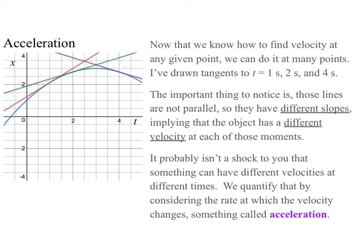The important thing to notice is those lines are not parallel, so they have different slopes, implying the object had a different velocity at each of those moments. It probably isn't a shock to you that something can have different velocities at different times. We quantify that by considering the rate at which velocity changes, which gets the technical term acceleration.